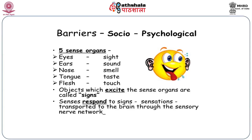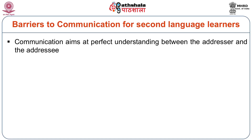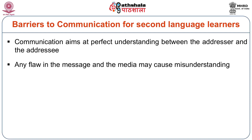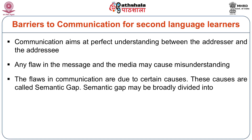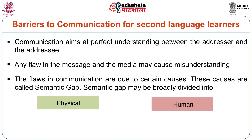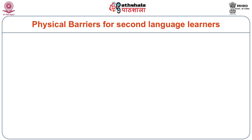When we say barriers, socio-psychological barriers are also there. We have five senses and we can use all five senses for communicating. Objects which excite the sense organs are called signs. Senses respond to signs, and sensations are transported to the brain through the sensory nerve network. Communication aims at perfect understanding between the addresser and the addressee. Any flaw in the message and the media may cause misunderstanding. The flaws in communication are due to certain causes, called semantic gap. Semantic gap may be divided broadly into two types: one is physical and the second is human.